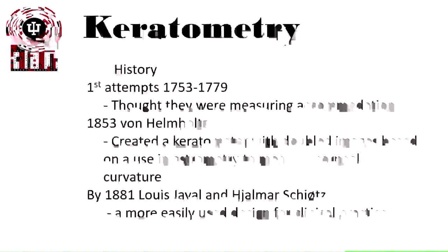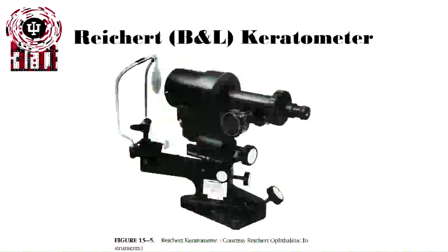A brief history of keratometry. The first attempts were made in 1753, when researchers thought they were measuring the accommodation of the eye. In 1853, von Helmholtz created a keratometer with a double image base, similarly used by astronomy to measure corneal curvature. By 1881, Louis Javall and Shiotz had a more practical design for clinical use. Today, the most common keratometer seen in practice is the BNL-Reichert keratometer, which most practices will have or have had.